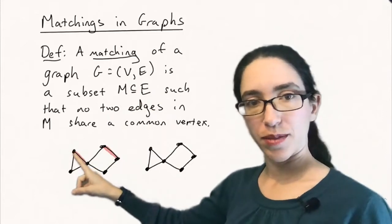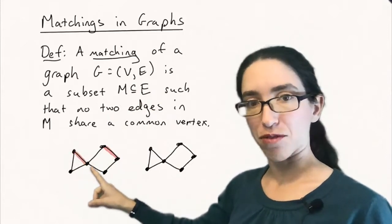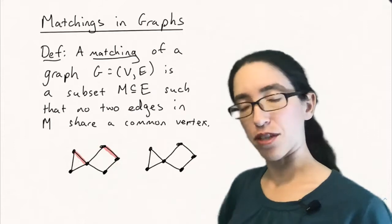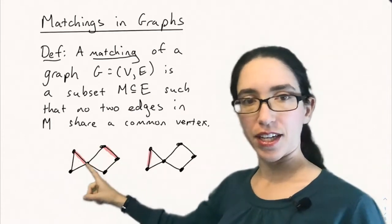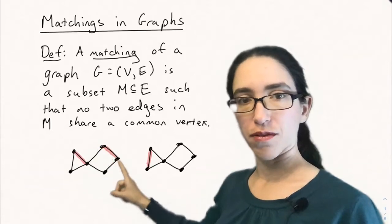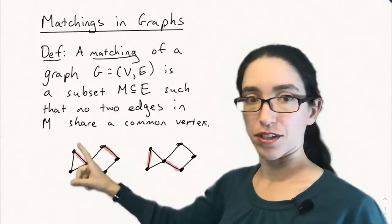For instance, in this matching, this vertex is matched to that vertex and this vertex is matched to that vertex because we chose those two edges. But we couldn't have chosen this edge as well because then it would share a vertex with this edge and also share a vertex with that edge.